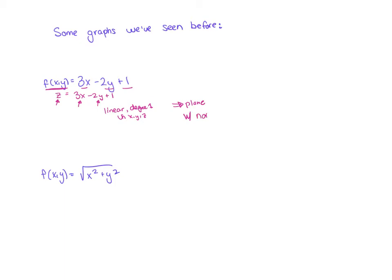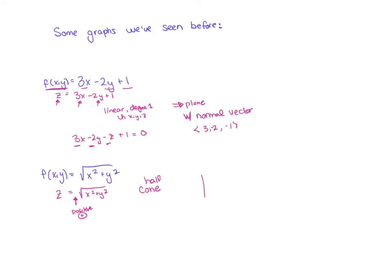I can read off the normal vector. Moving z to the right side gives the coefficients 3, −2, −1 as my normal vector. Below that we have z = √(x² + y²), which we should recognize as part of a cone. Because I have the square root without a plus or minus, it's implicitly always the positive version, giving just the top half of that cone.